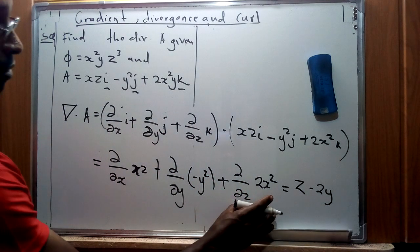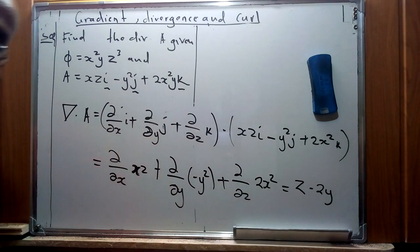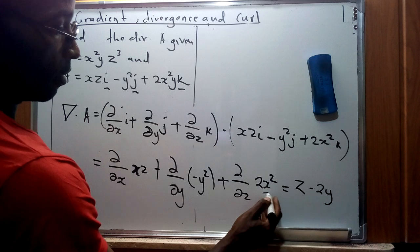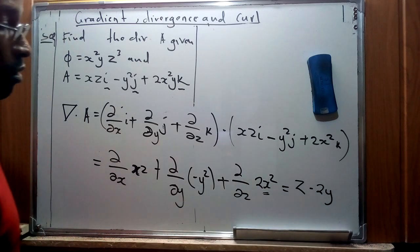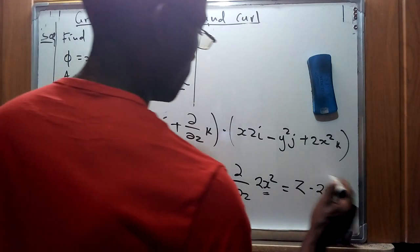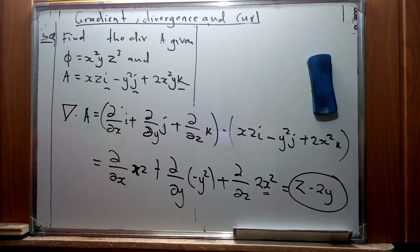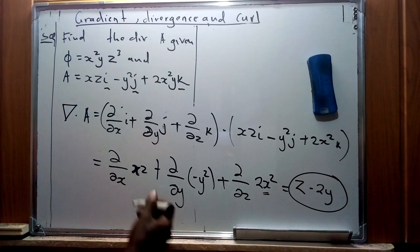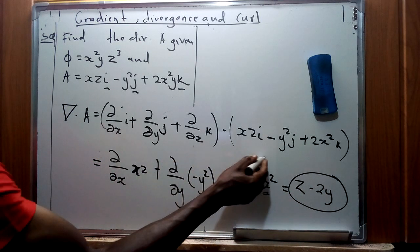For the z component, we differentiate 2x squared with respect to z. Since this term does not contain z, it equals zero. Therefore our equation for the divergence of A gives us z minus 2y.